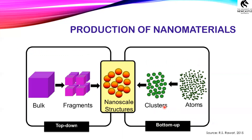So how are these nanomaterials produced? They can be produced by either the top-down approach or the bottom-up approach. In the top-down approach, bulk materials are broken down physically or chemically to yield smaller fragments and then nanoscale substances. Whereas in the bottom-up approach, it is built atom by atom, joining them little by little to form clusters, and then the clusters are joined to form nanoscale structures.